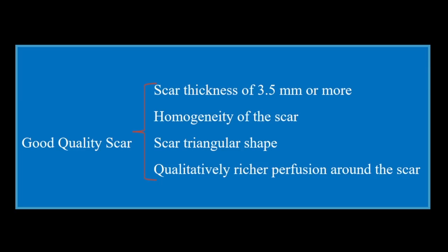A good quality scar has optimal thickness of about 3.5 mm or more, is homogeneous, and is triangular in shape. Even if the triangular shape cannot always be demonstrated, absence of ballooning is sufficient. Some studies also note qualitatively richer perfusion around the scar site, though not all machines can demonstrate vascularity at that level. Richer perfusion suggests a more stable and well-integrated scar.